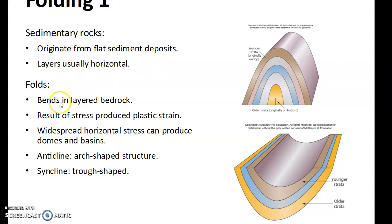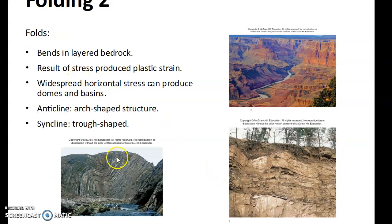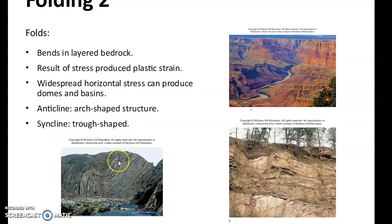Layers in sedimentary rock are usually horizontal. Bends in them occur when the bedrock shifts as a result of stress in those areas. Widespread horizontal stress can produce domes and basins. An anticline is an arc-shaped structure, and a syncline is a trough-shaped structure. These folds result from stress-produced plastic strains. Wide-spread stress can also produce domes and basins.